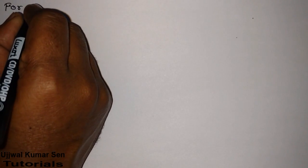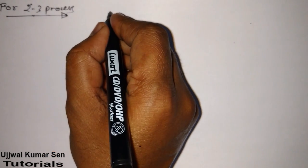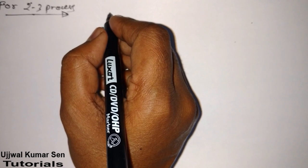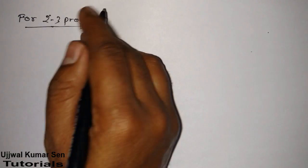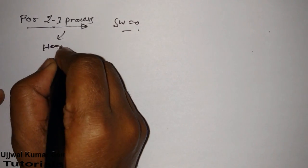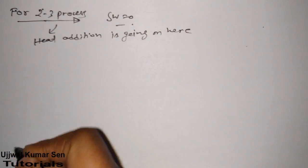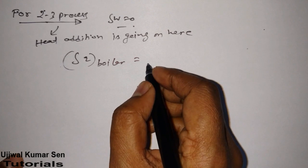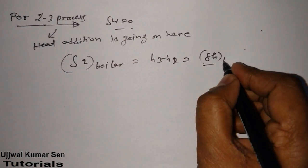For the 2-to-3 process: this is a constant pressure process with heat addition going on, because water is converted into steam or superheated steam in the boiler. Here delta W equals zero, and heat addition gives us: delta Q_boiler = H3 minus H2.